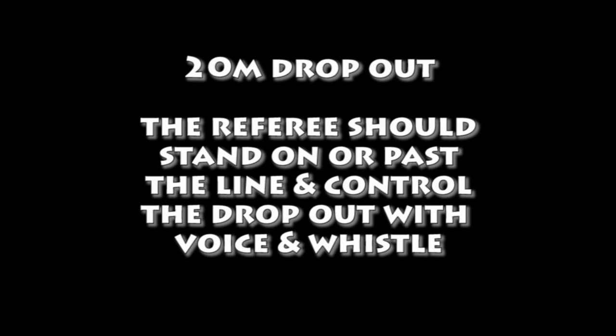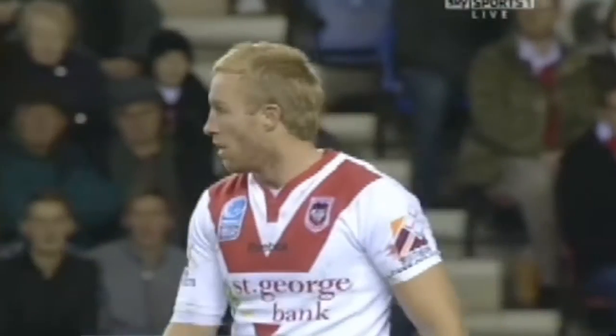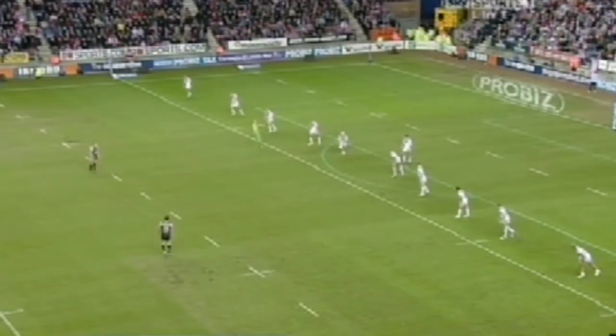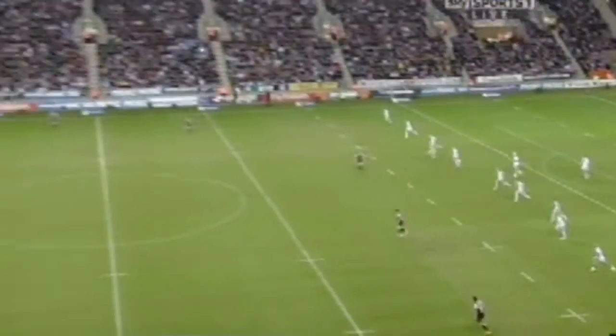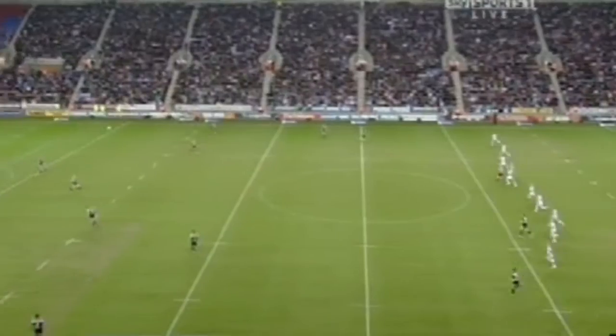Again, the referee should stand on or past the line and control the dropout with voice and whistle, standing side on to the dropout and monitoring for possible infringements whilst they control the kick.